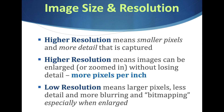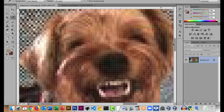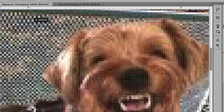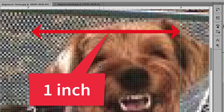Resolution means how many pixels per inch. A lot of people think it means quality — and that's true, more pixels means more quality — but technically it's pixels per inch. Low resolution means larger pixels and you'll see more bitmaps. Looking at the dog image, it's kind of low resolution. If I mark off one inch on this image and count the pixels across, you're going to get 72 — it's 72 pixels per inch.